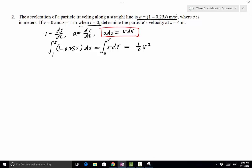On the left-hand side, we integrate this part, and that is s minus one-eighth s squared, evaluated from 1 to s, which means that's s minus one-eighth s squared minus 1 minus one-eighth times 1 squared. And that equals one-half v squared.